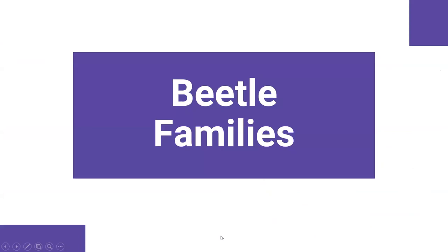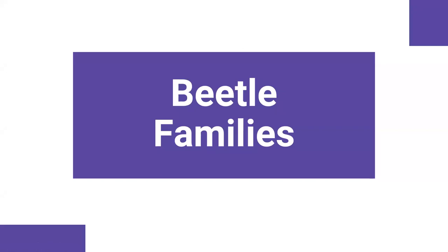That's just a little bit about what beetles are, where they're at in the world, and a simple overview of their anatomy. Now I'm going to get into the beetle families. There are about 40-some beetle families. I did not go through all of them — I tried to really hit the ones that people would be familiar with or ones that we have here in Nebraska. So we'll go ahead and get started with those.